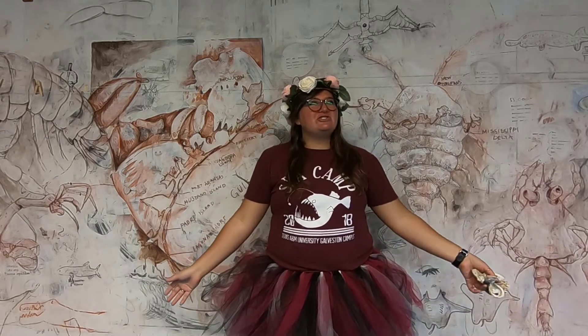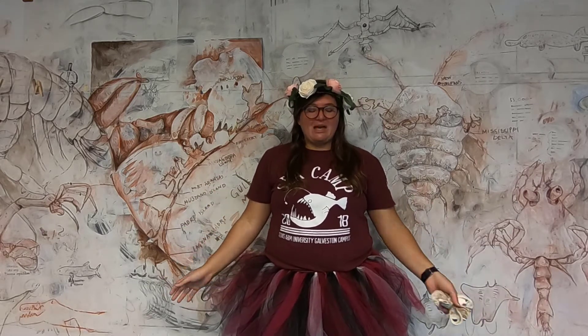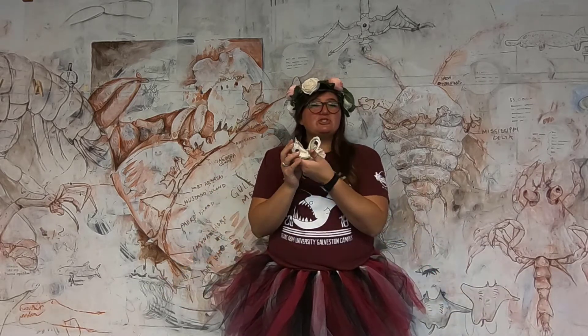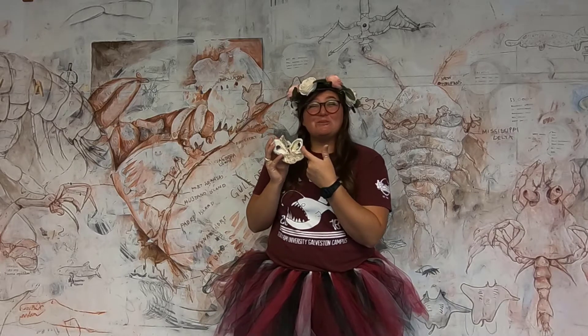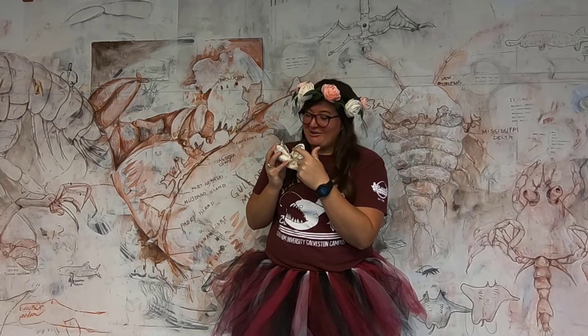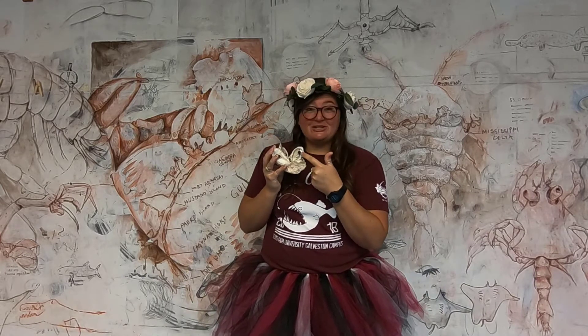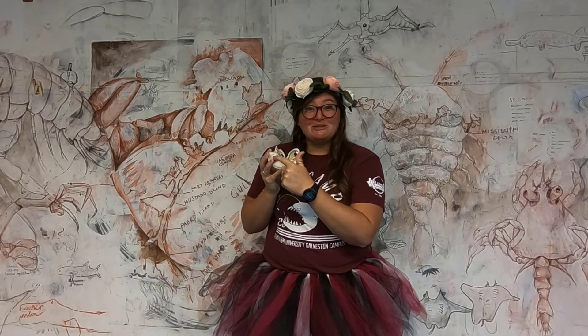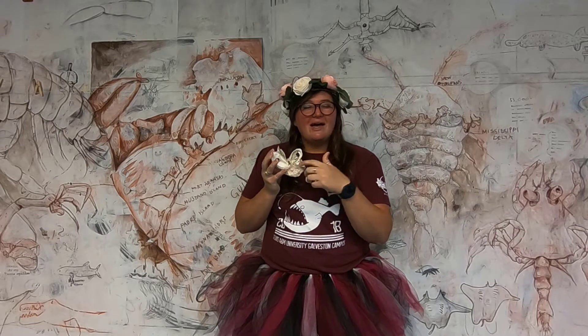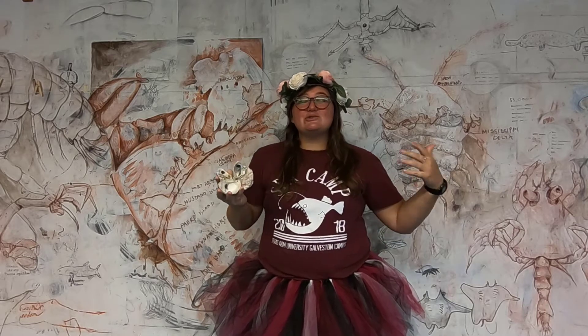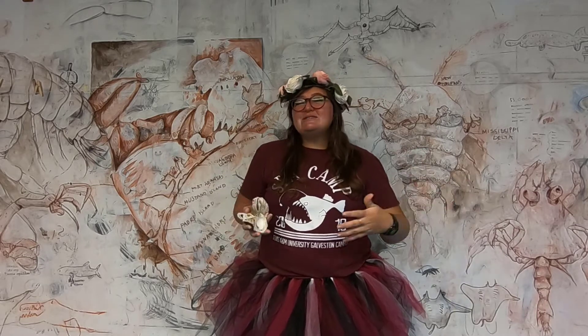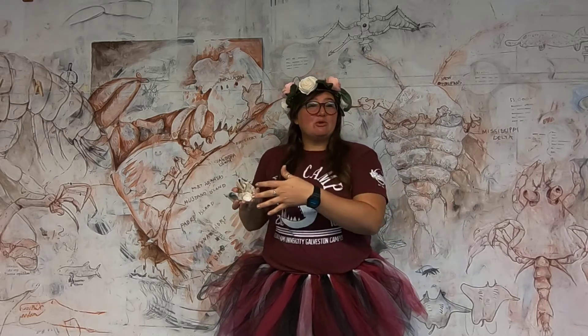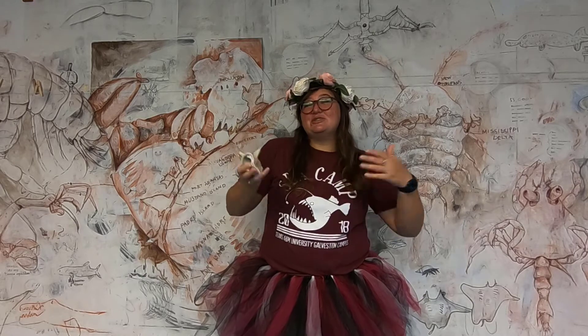A lot of people think of oysters as just the shell. They have this beautiful shell that has a purple spot right here. You can always tell if it's an oyster because they have a purple spot right here — it's called their muscle scar. That's where the actual animal will attach to the shell.